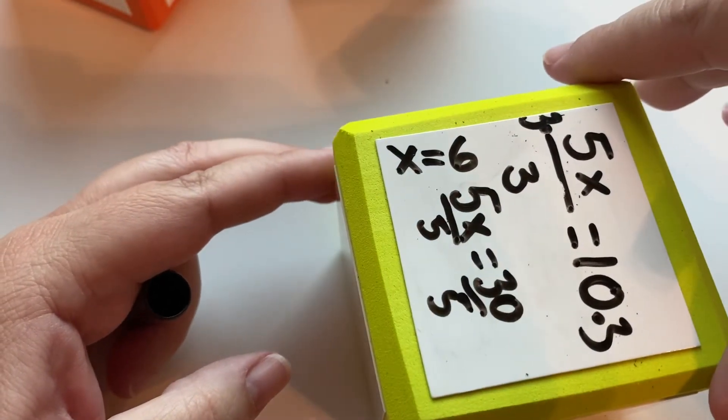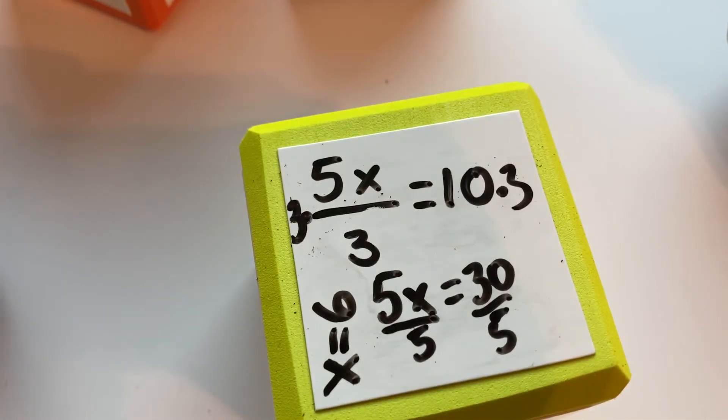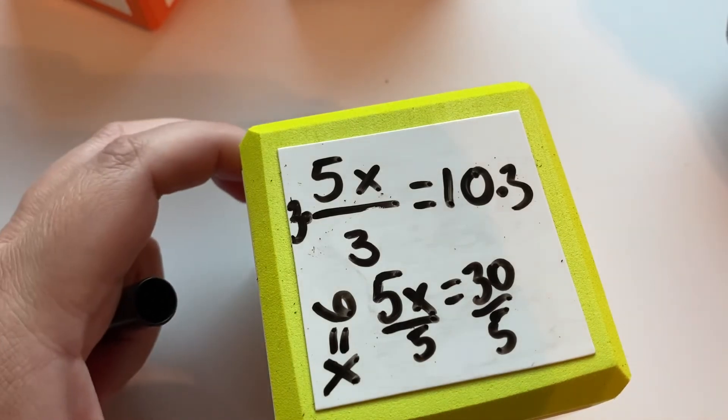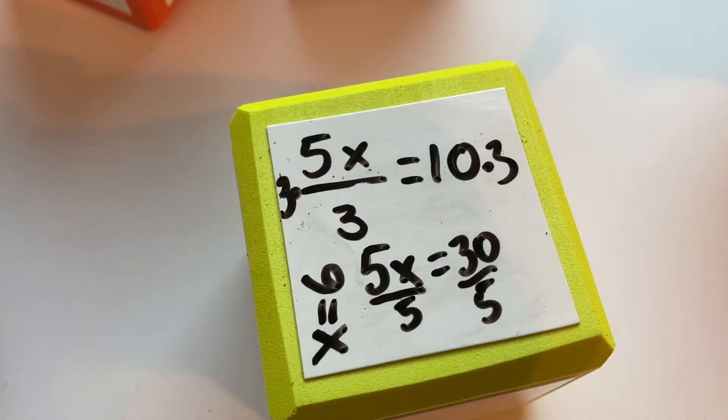So yeah, that's how you do this type of problem. And remember, you're going to want to get rid of the fraction first. The fraction is division, so you do the inverse operation to both sides. And then you'll be left with multiplication, and you do the inverse operation to both sides, which is division.